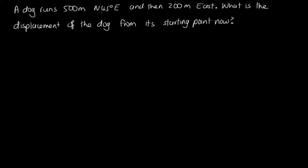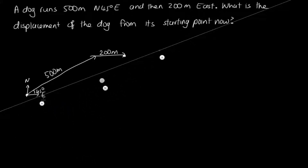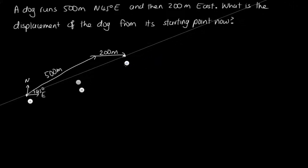The dog runs 500 metres north 45 degrees east, so considering our compass, here's north and here's east. The first vector has a magnitude of 500 metres and that angle is 45 degrees. After this, the dog then runs 200 metres east, so we draw this second vector at the head of the first vector — 200 metres east, so this has a magnitude of 200 metres. What we're asked to find is the displacement from the starting point, so our resultant vector goes from the tail of the first vector to the head of the second vector. We draw the double arrowhead to show this is our resultant.